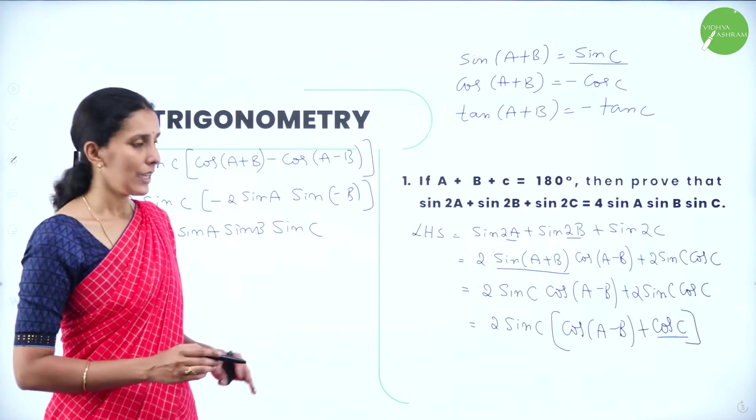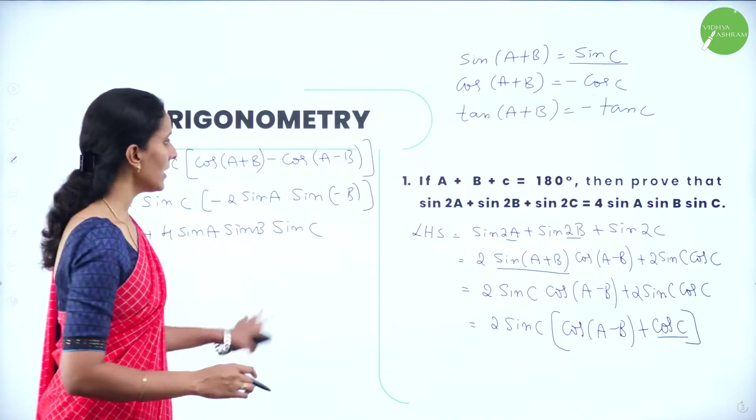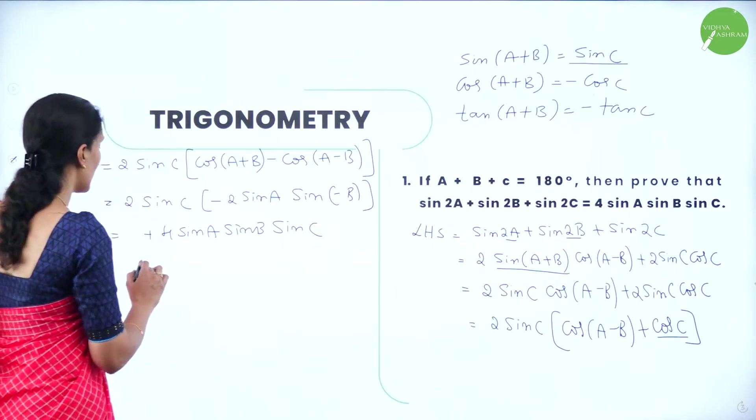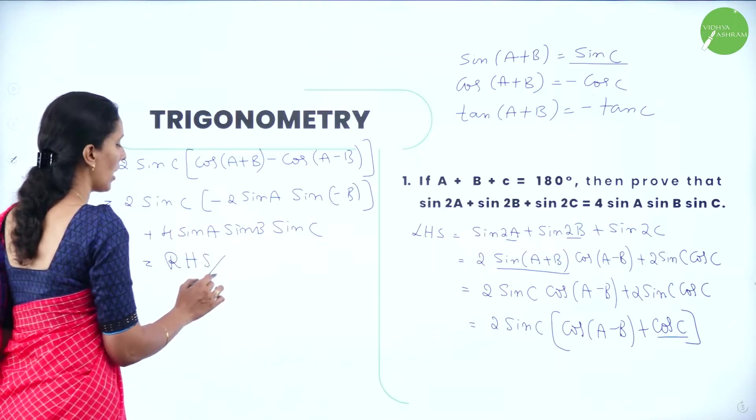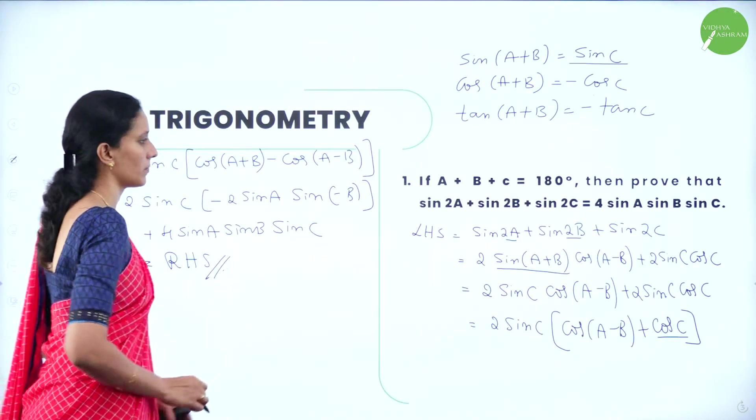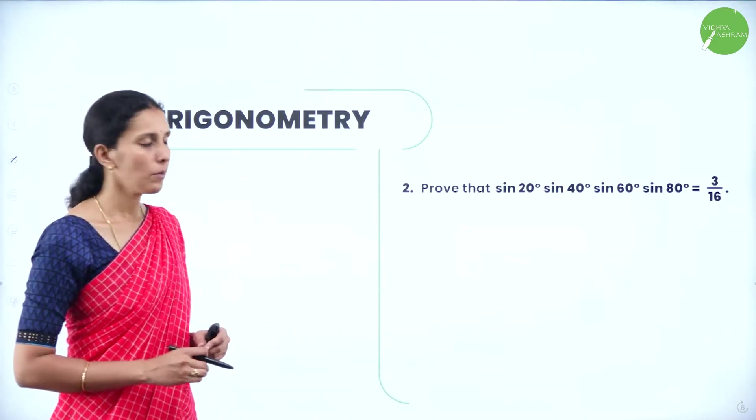Since sin of a negative angle is −sinθ, the negative sign resolves and the answer is 4sinA·sinB·sinC, which equals the RHS of the required result. Hence proved.